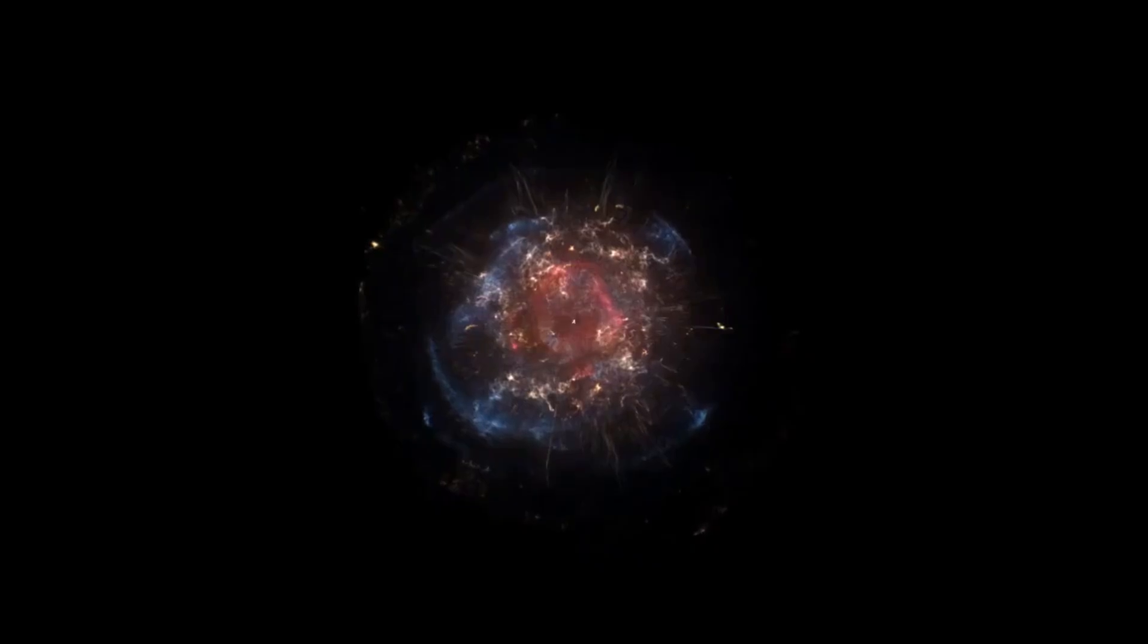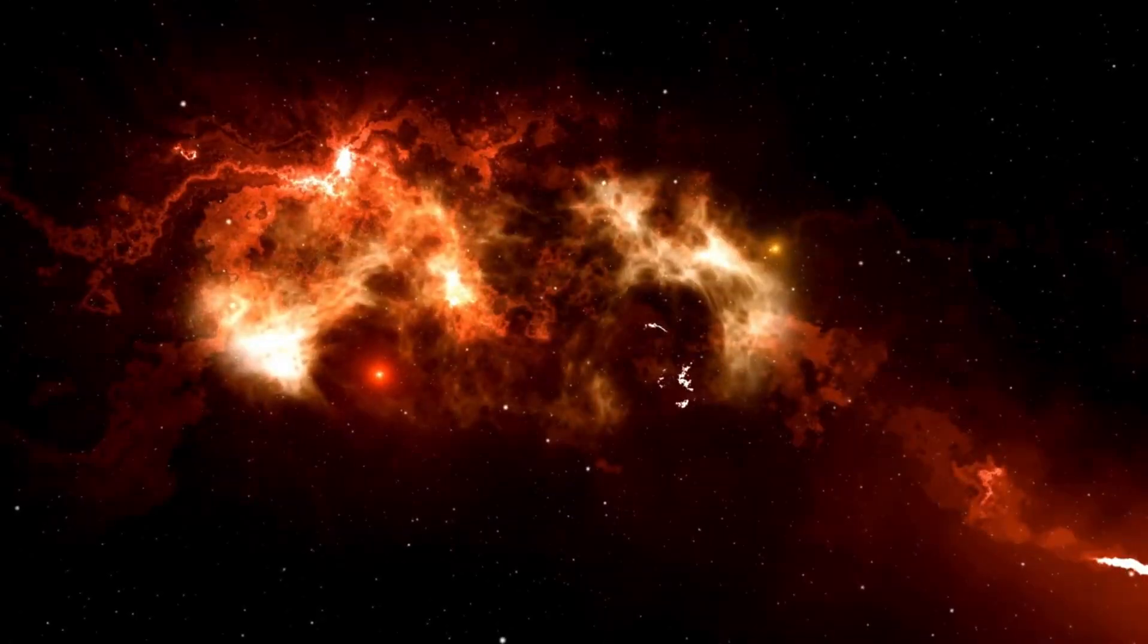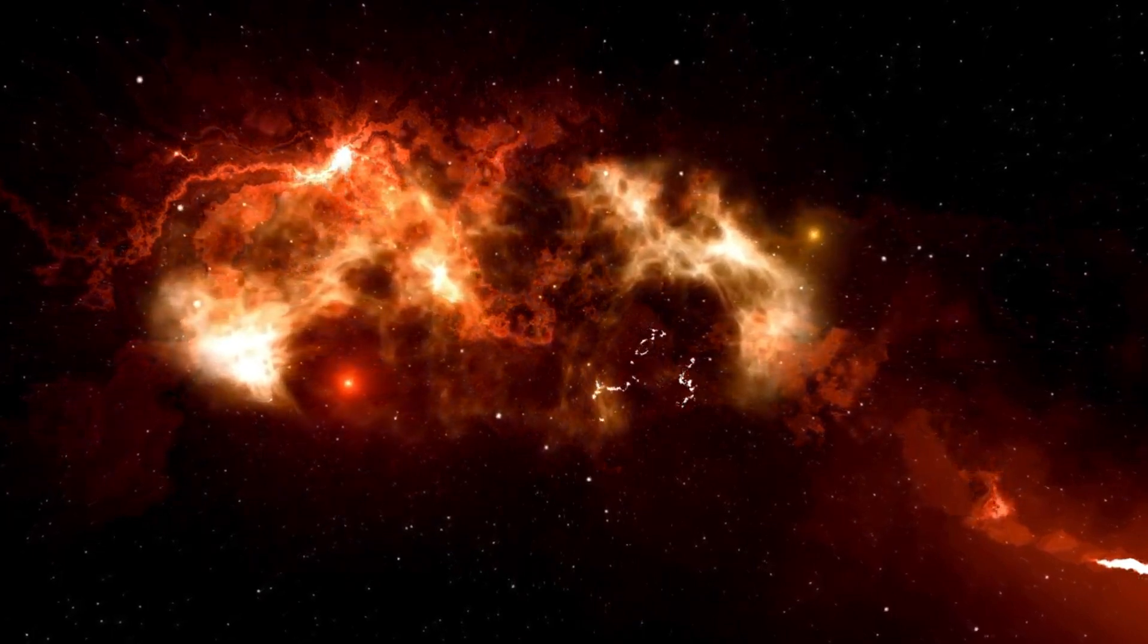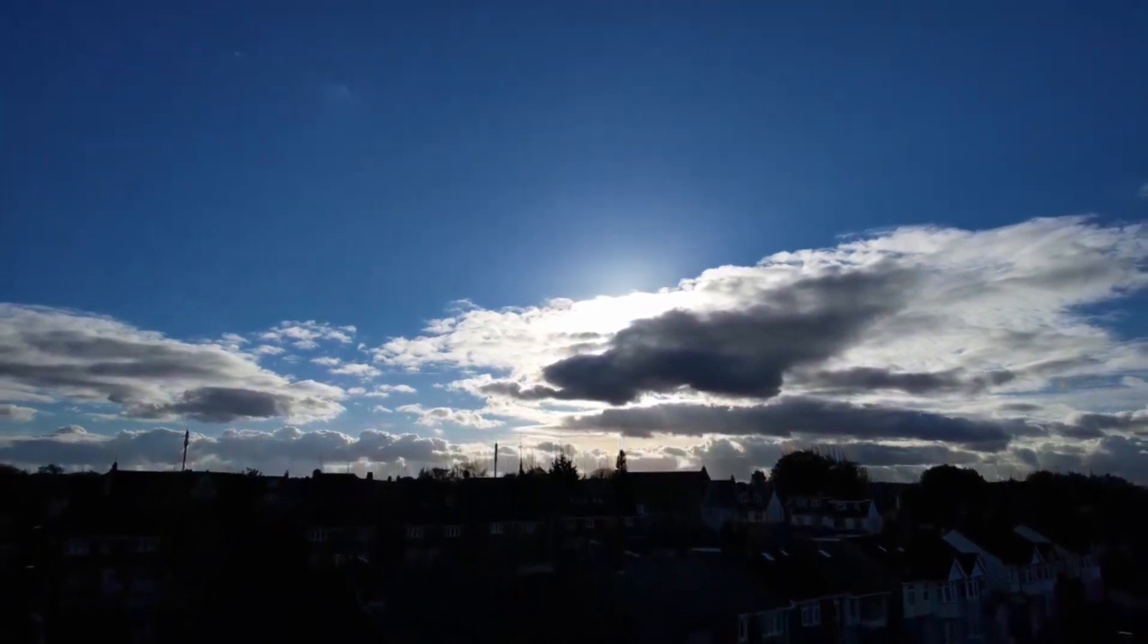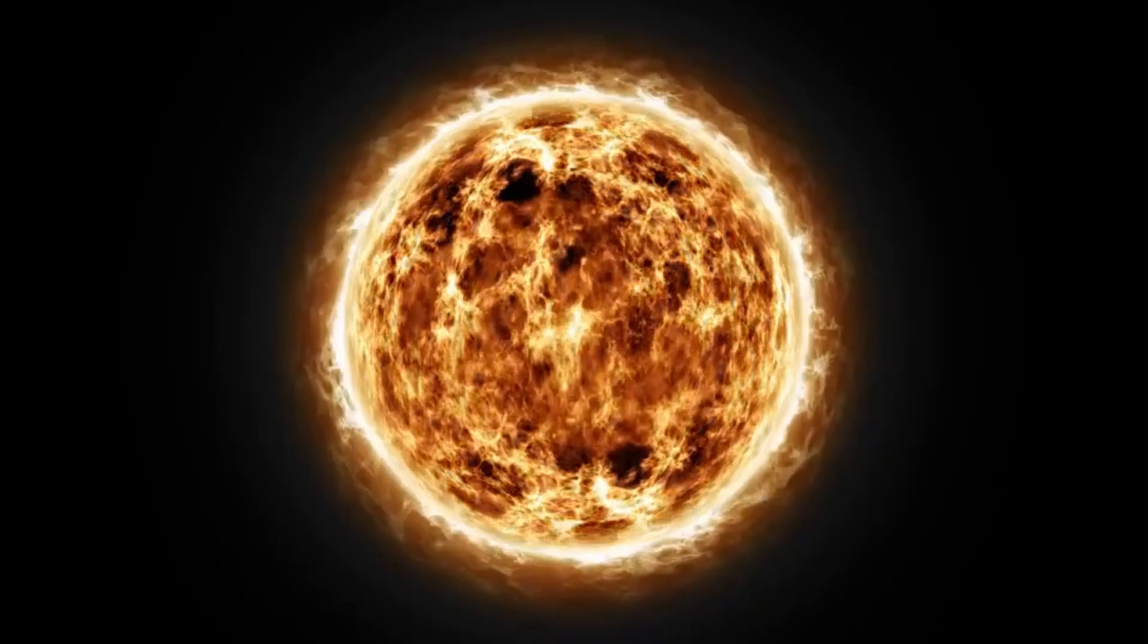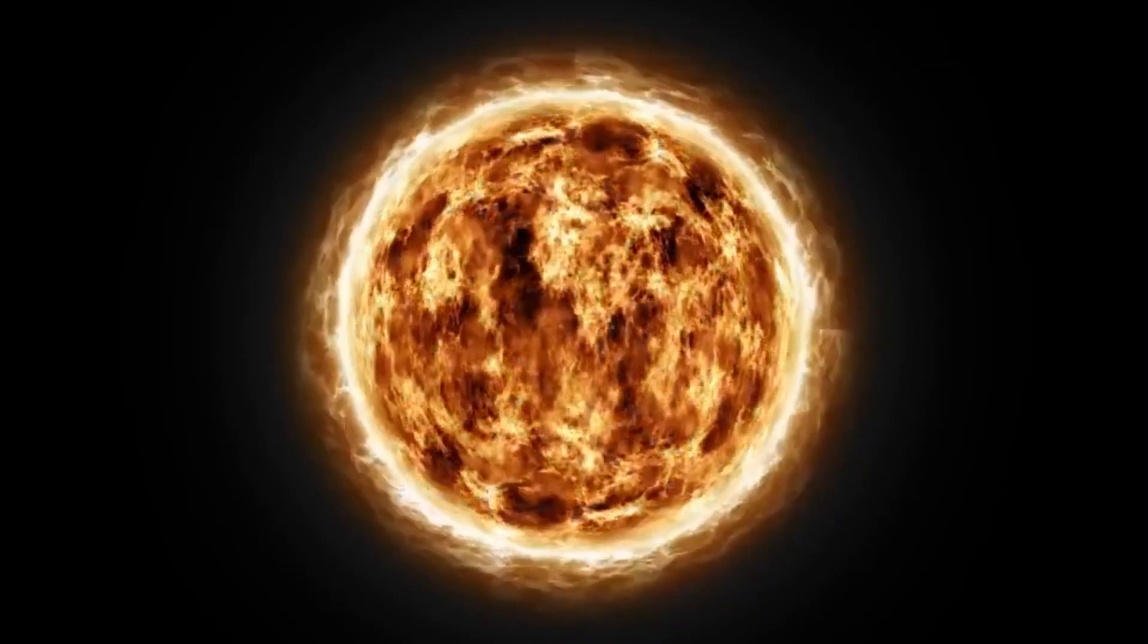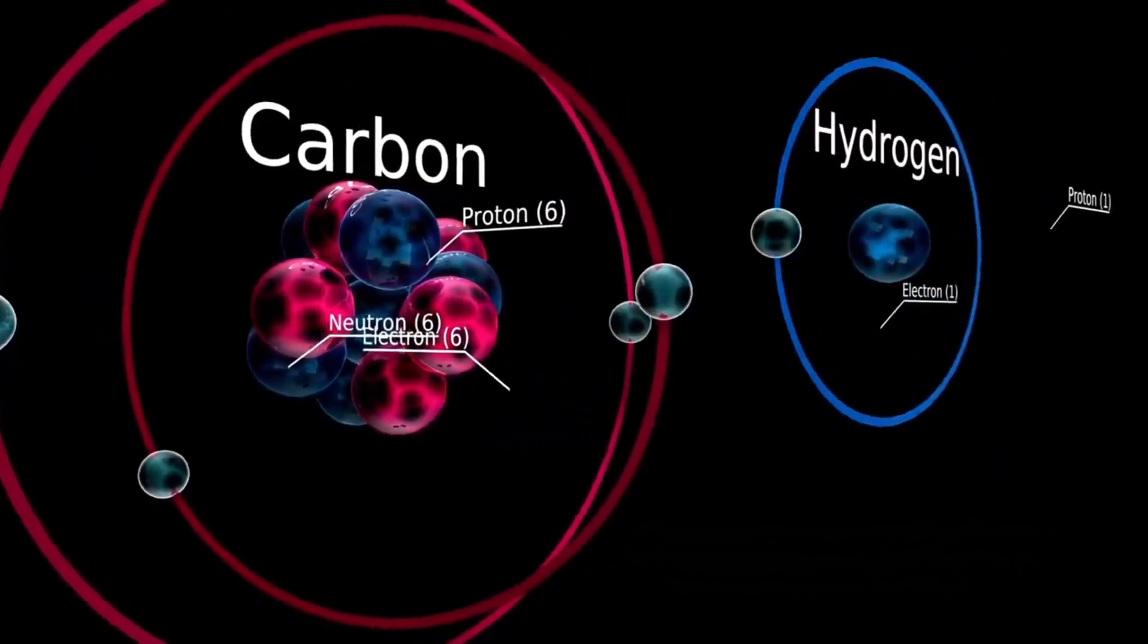Betelgeuse, often referred to as the shoulder of Orion, is one of the brightest stars in the night sky and one of the largest stars known to humanity. If placed at the center of our solar system, its surface would extend beyond the orbit of Mars, engulfing the inner planets in its fiery embrace. This massive star, located approximately 650 light-years from Earth, is a semi-regular variable star, meaning its brightness fluctuates over time. These fluctuations are part of its natural life cycle as a red supergiant, but recent observations have revealed changes that are anything but ordinary.